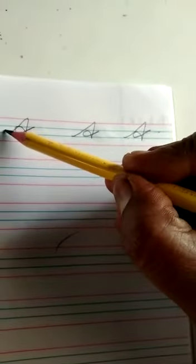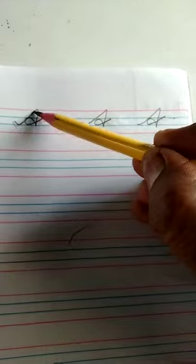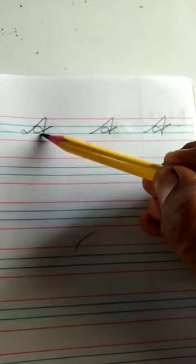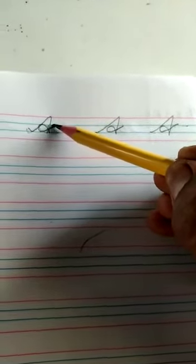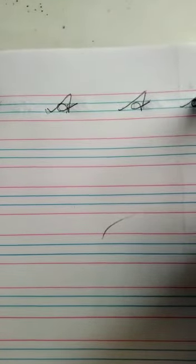Capital letter cursive A. Spell and write: up forwards slanting line, down backwards slanting line, up forwards slanting line, anti-clockwise loop. Yay!